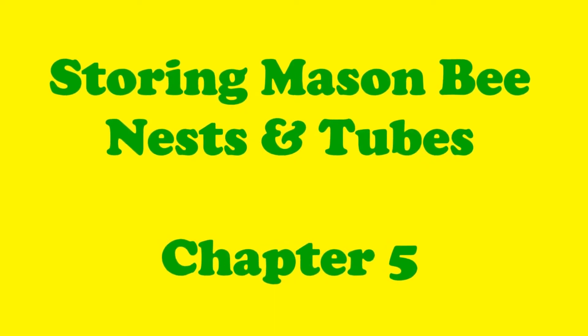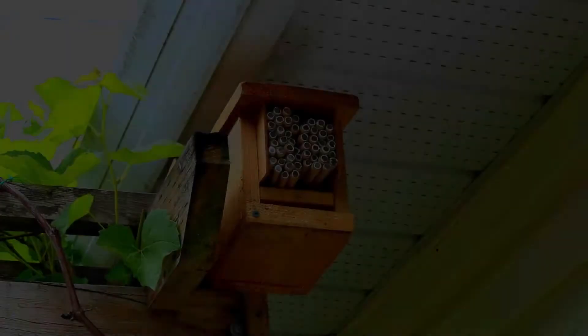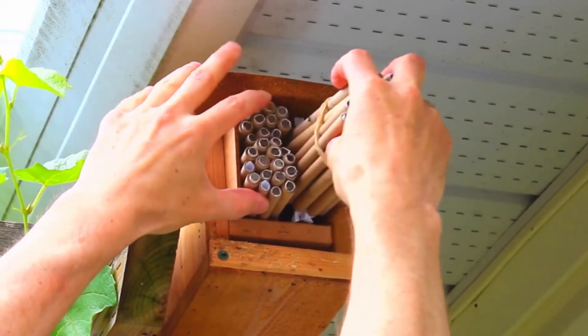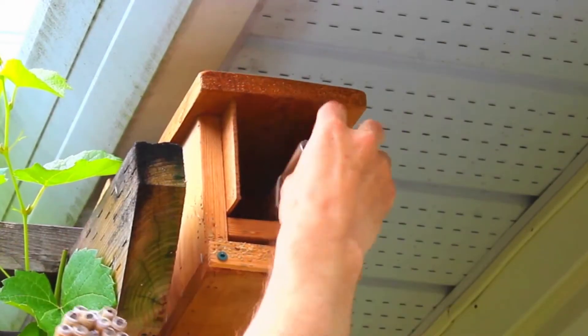Storing mason bee nests and tubes. The mason bee season is quite short, beginning with the spring and only lasting a few months before all the bees die off, while their offspring develop in their cocoons and then hibernate for the rest of the year.